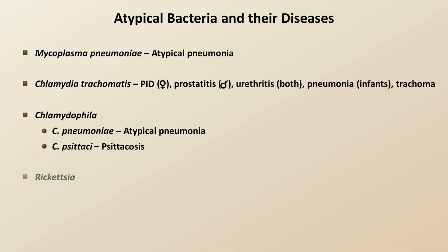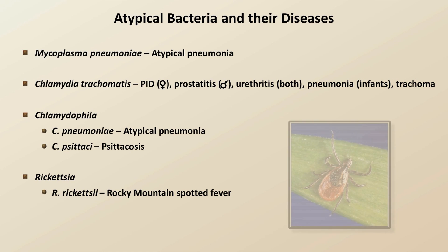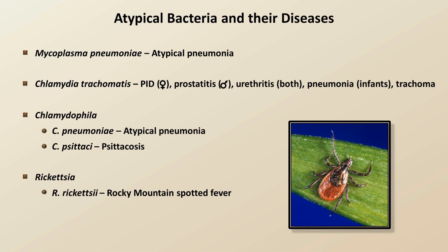The genus Rickettsia has many relevant species, all of which are transmitted to humans by arthropods. Rickettsia rickettsii causes Rocky Mountain Spotted Fever, a potentially fatal tick-borne illness present in North and South America, and despite its name, is actually most prevalent in the southeastern and south-central regions of the United States.